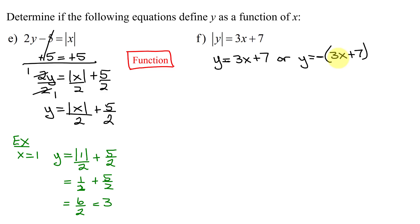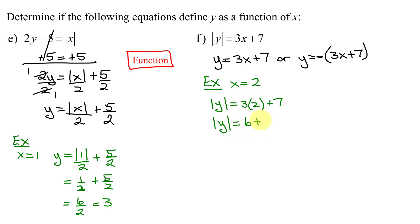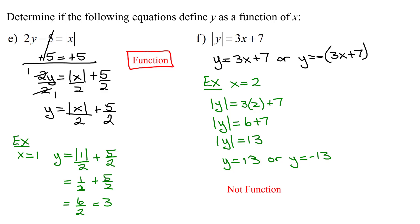So one x is going to give me two different y values. Let's pick x = 2: |y| = 3(2) + 7 = 6 + 7 = 13. If |y| = 13, then y could equal 13 or y could equal -13, since the absolute value of both 13 and -13 is 13. So for this last example, this equation does not define y as a function of x.